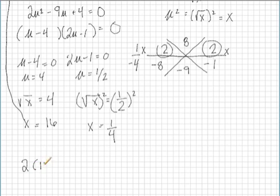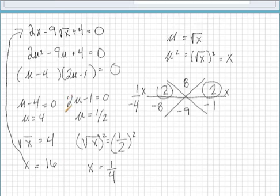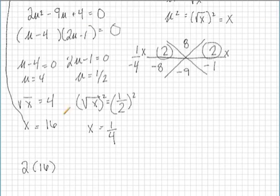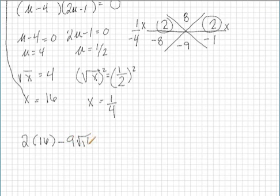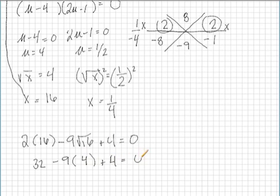So we have 2 times 16 minus 9 times the square root of 16 plus 4 is equal to 0. 2 times 16 is 32 minus 9. Square root of 16 is 4 plus 4 is equal to 0. We get 32 minus 36 plus 4 is indeed equal to 0. So 16 checks out.